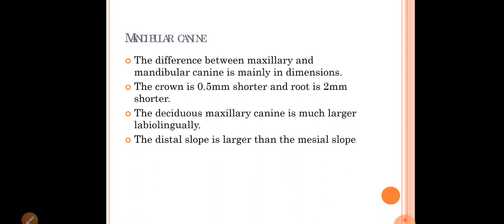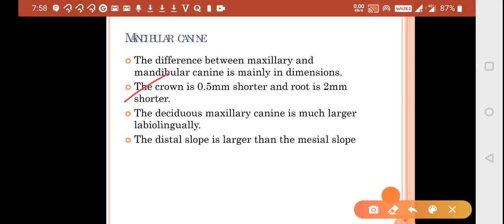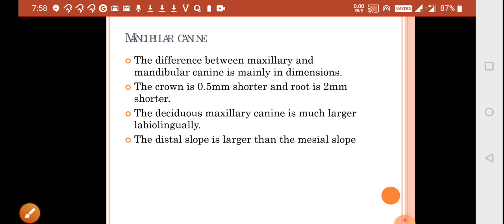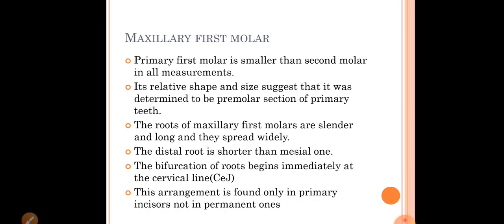For the mandibular canine: the difference between maxillary and mandibular canines is mainly in dimensions. The mandibular canine is smaller compared to the maxillary canine. The deciduous maxillary canine is much larger labiolingually compared to the mandibular canine. In the mandibular canine the distal slope is larger than the mesial slope, while in the maxillary canine the mesial slope is larger than the distal slope.